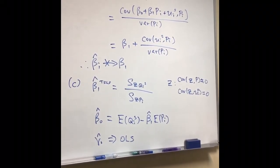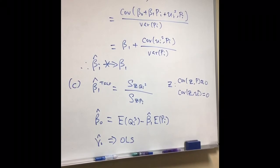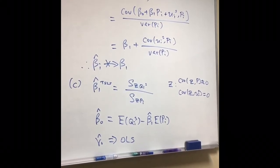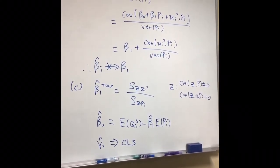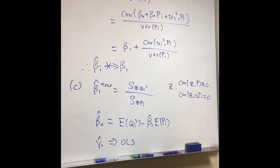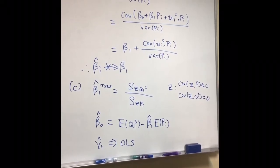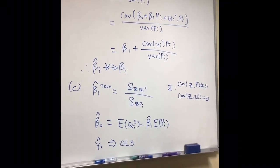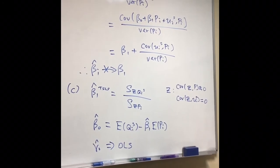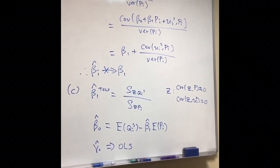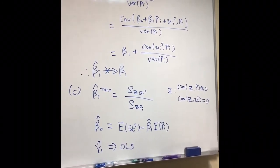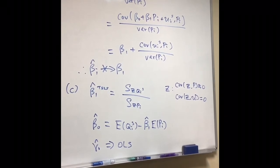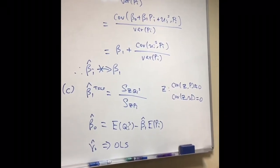Second, the covariance of the instrument Z and Ui must equal zero. If you find such an instrument, you can estimate beta_1_hat using two-stage least squares, where beta_1_hat equals the sample covariance of Z and Q1S divided by the sample covariance of Z and PI.